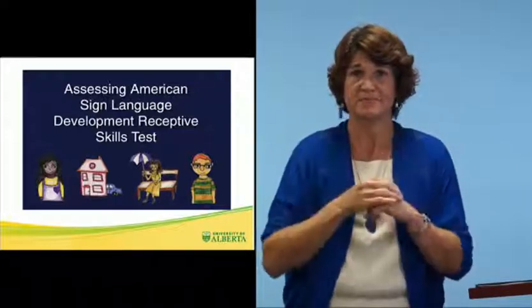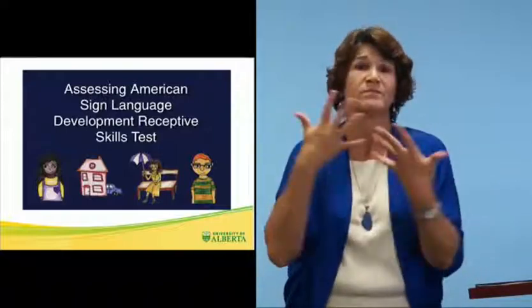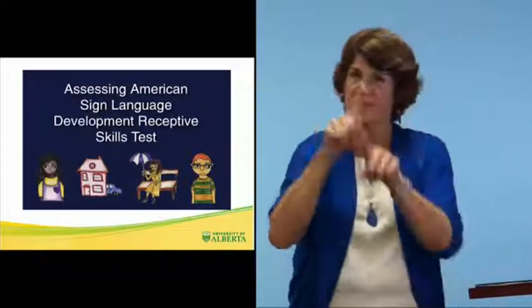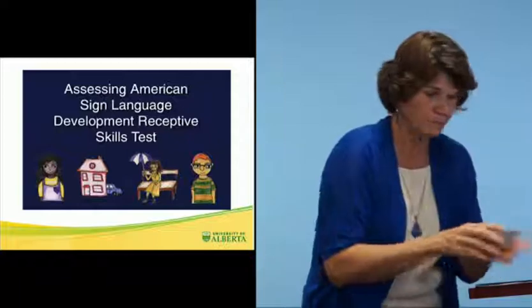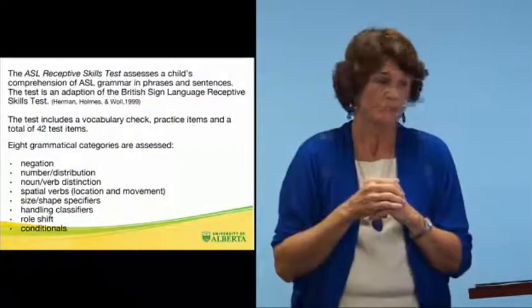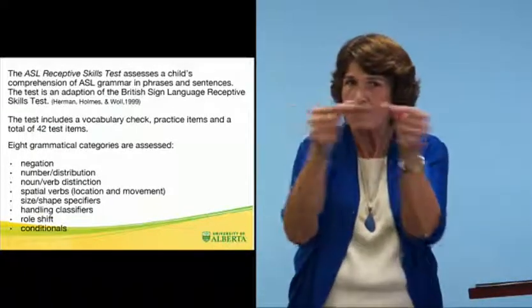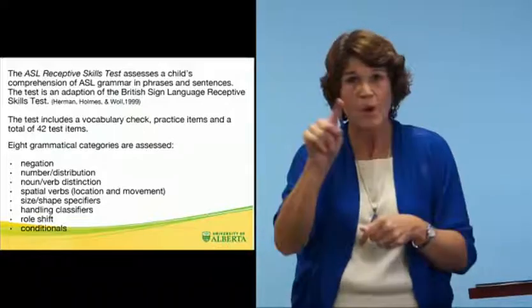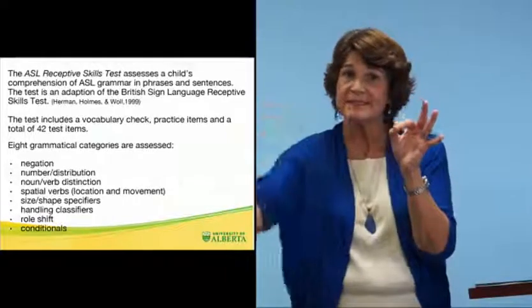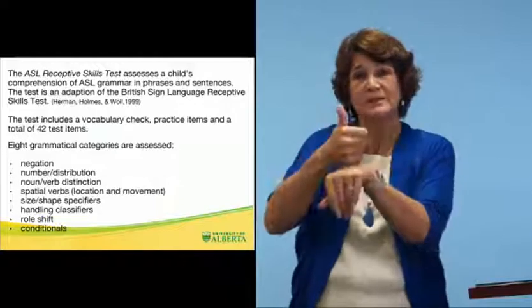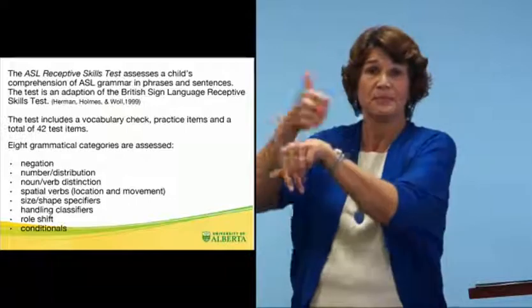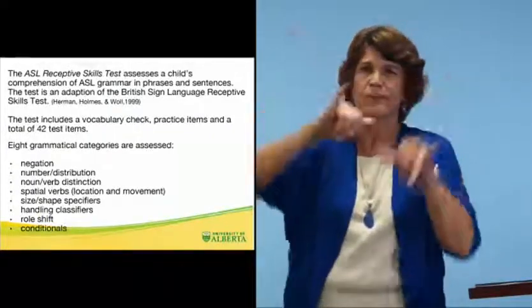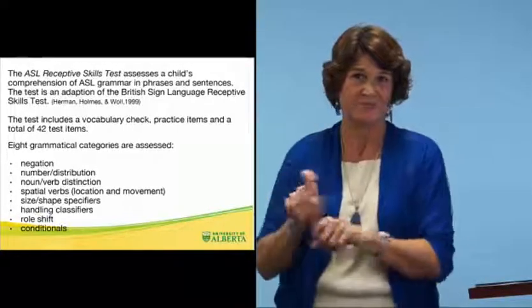The second test is the ASL Receptive Skills Test, which has been developed for several years and many schools are already using it. The same age group of 4 to 13 was used. This test looks for eight grammatical categories the child can identify — matching a signed phrase or sentence to a picture. The test is based on a British Sign Language assessment modeled on the PPVT, the Peabody Picture Vocabulary Test, a standardized test, and follows a very similar design and format.